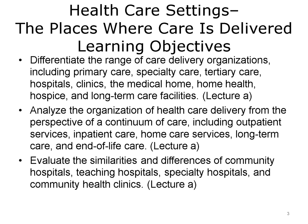The objectives for this unit, Health Care Settings: the Places Where Care is Delivered, are to differentiate the range of care delivery organizations, including primary care, specialty care, tertiary care, hospitals, clinics, the medical home, home health, hospice, and long-term care facilities. Analyze the organization of health care delivery from the perspective of a continuum of care, including outpatient services, inpatient services, home care services, long-term care, and end-of-life care. Evaluate the similarities and differences of community hospitals, teaching hospitals, specialty hospitals, and community health clinics.